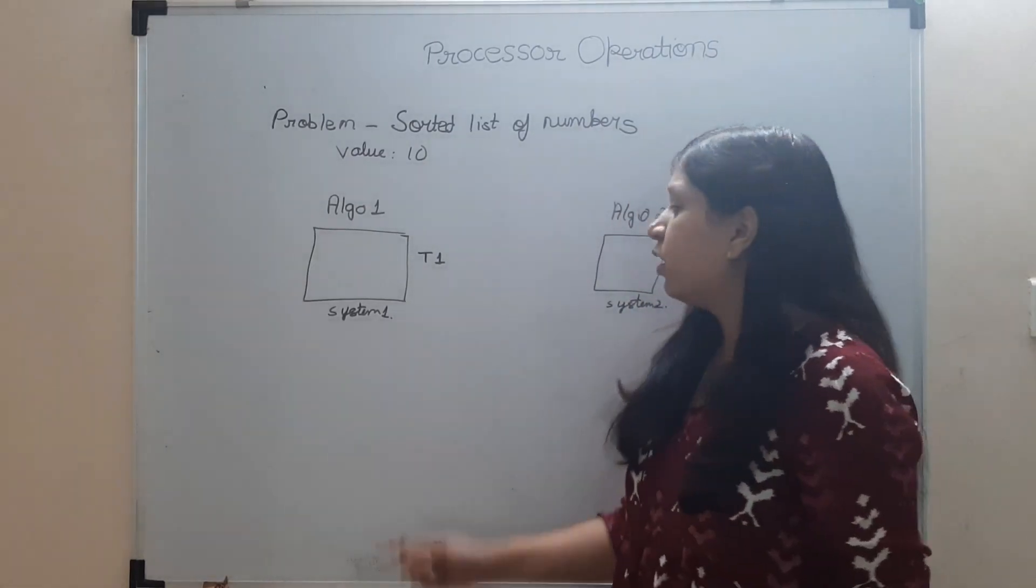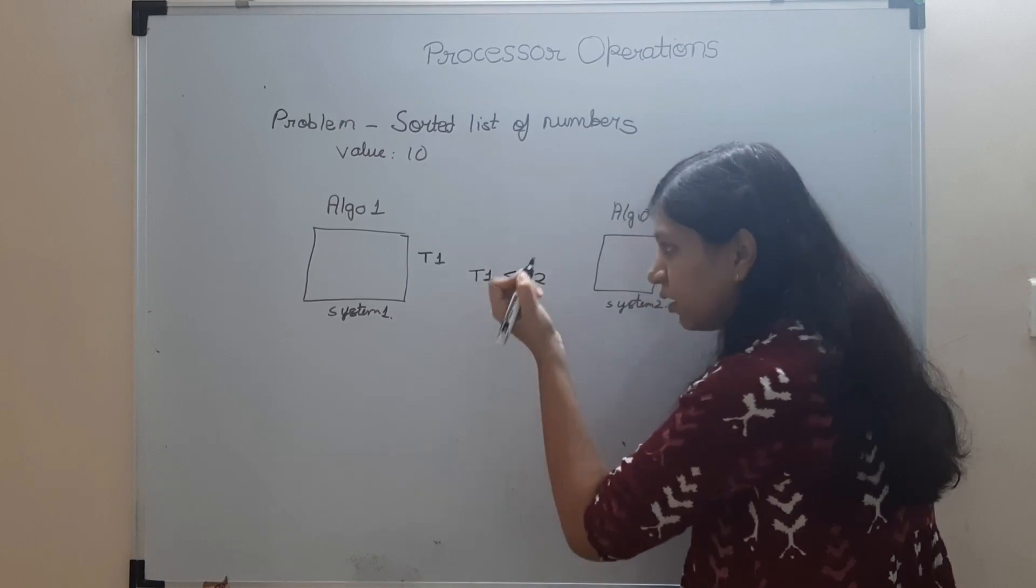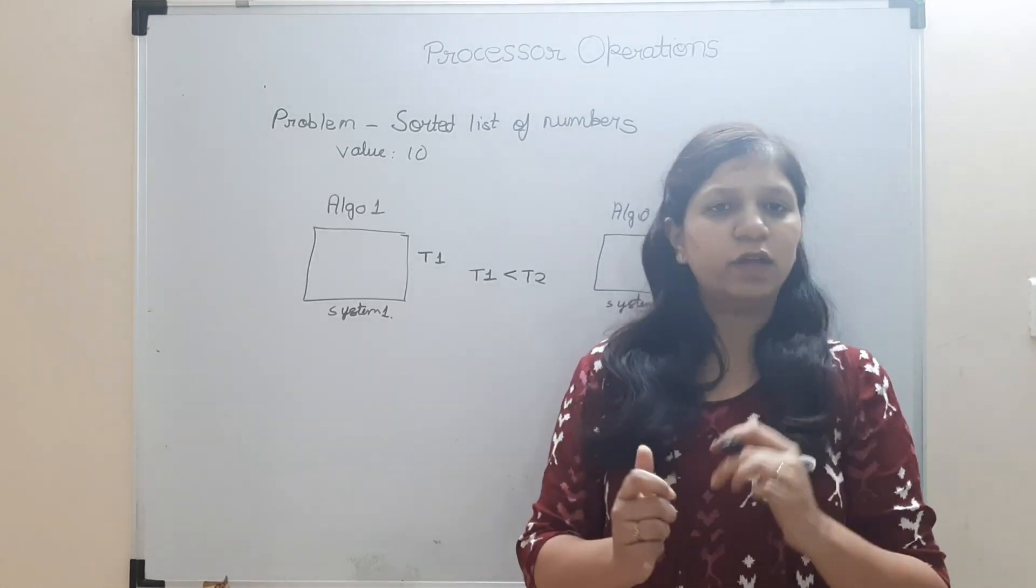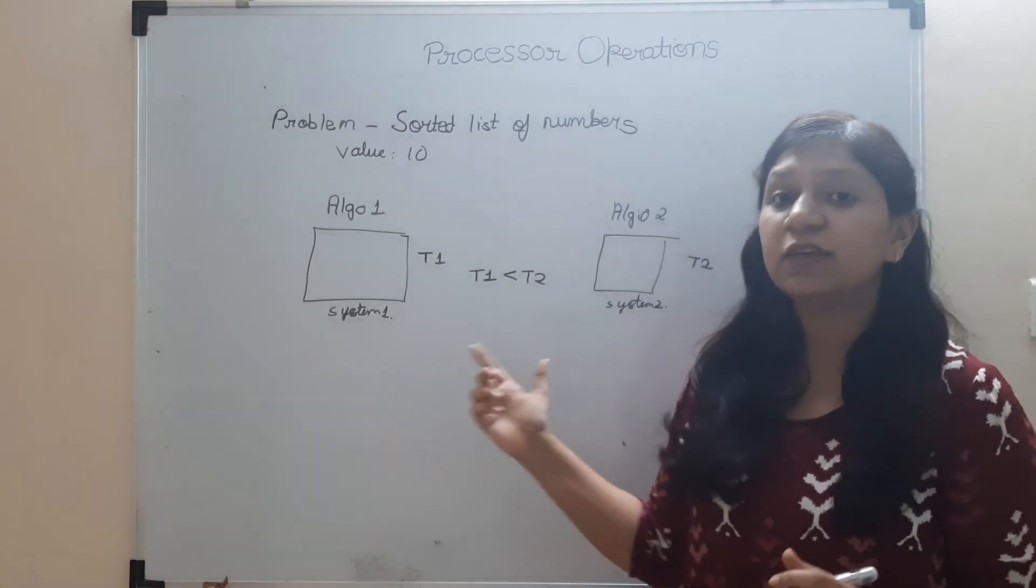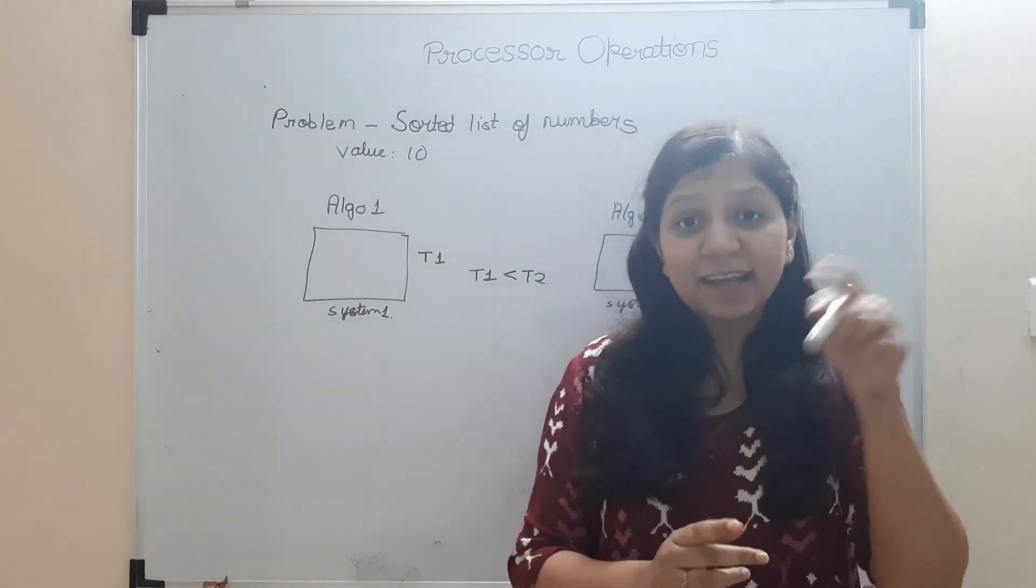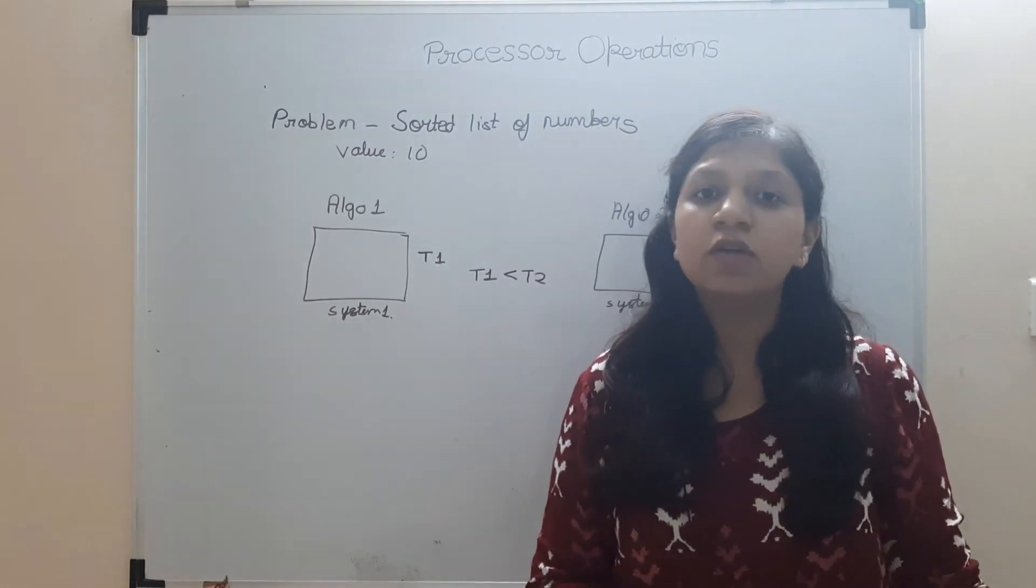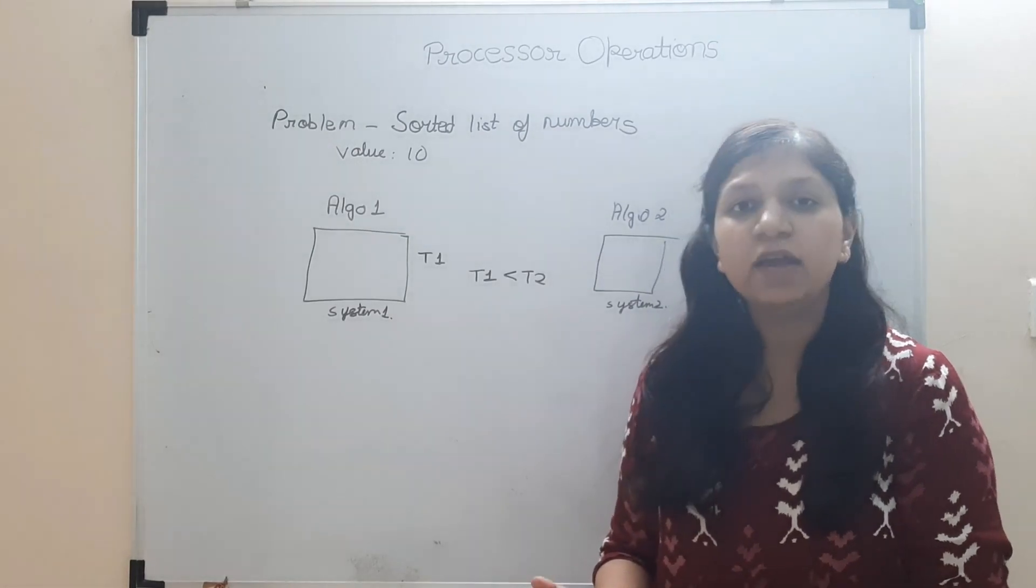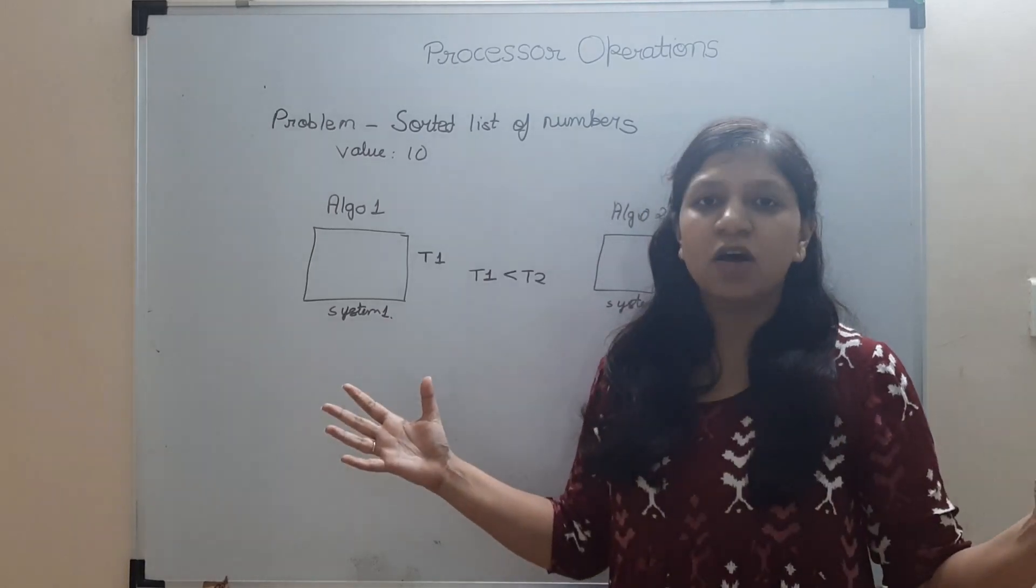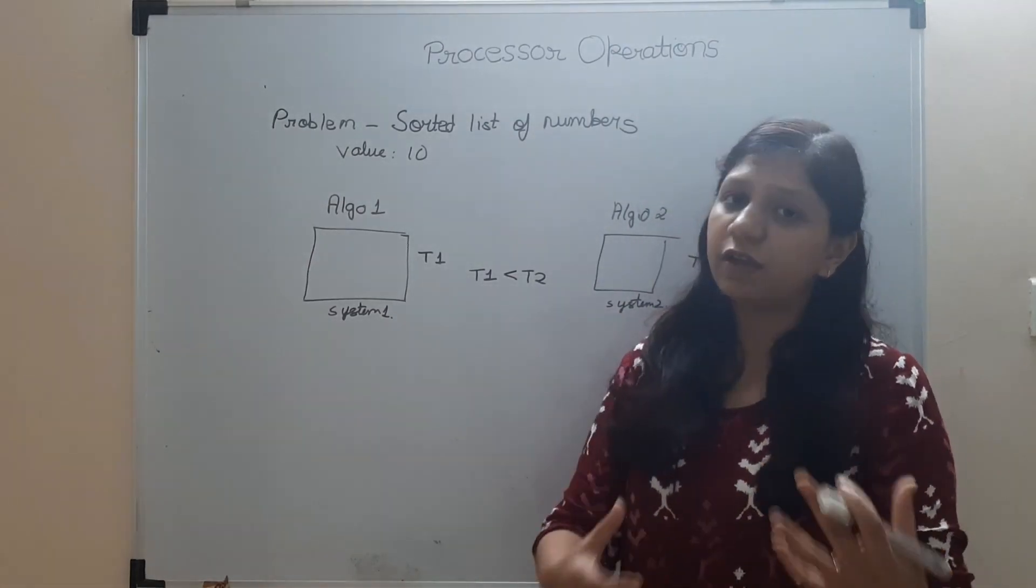So what will you say? If t1 is less than t2, meaning algo1 is taking less time than algo2, then algo1 is better because it is taking less time, right? But you have not checked system 1 and system 2's configuration. Maybe system 1's configuration is so good that it has made algo1 run fast, and maybe system 2 is an old generation computer. That's why the results were not that fast.